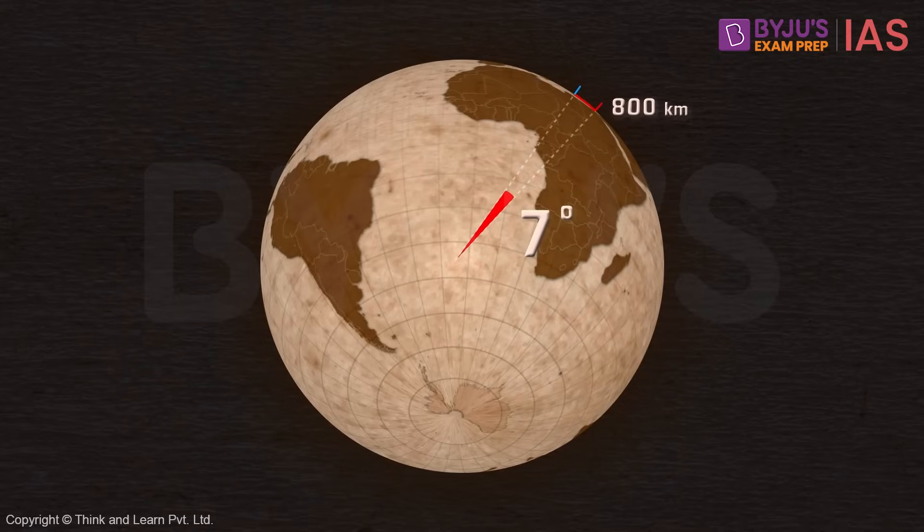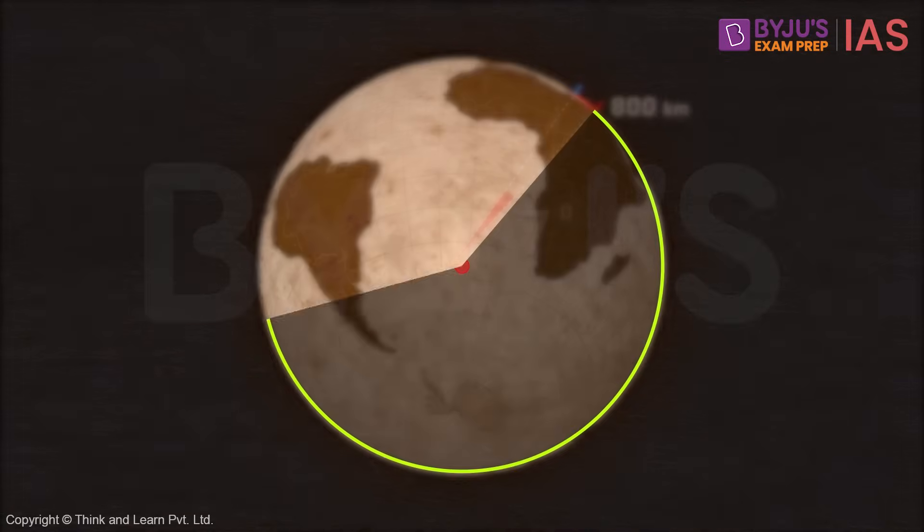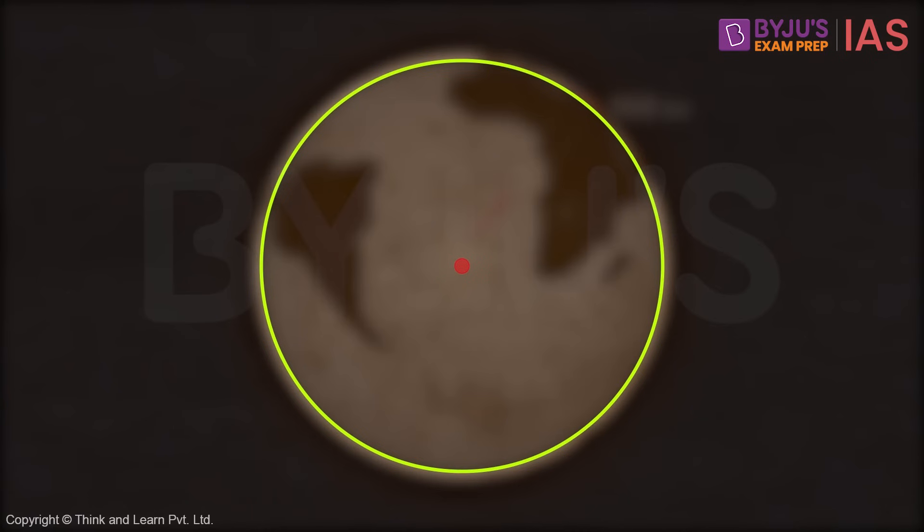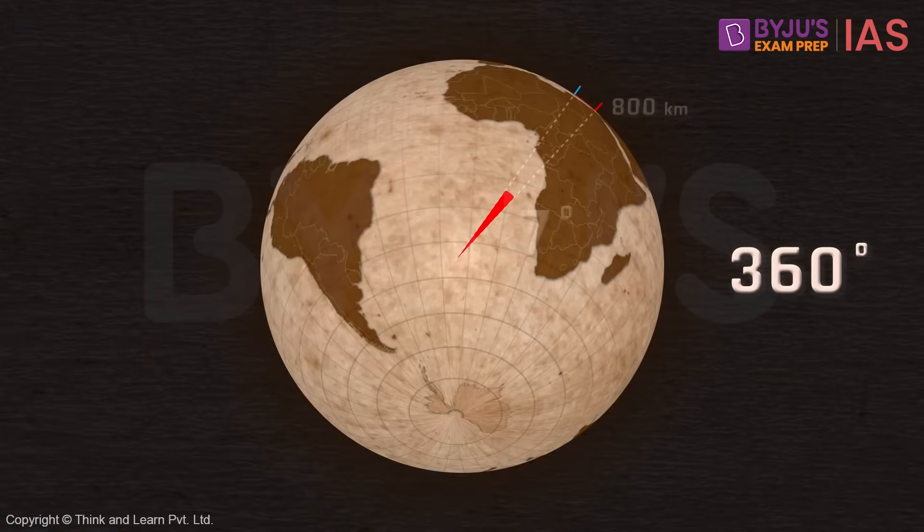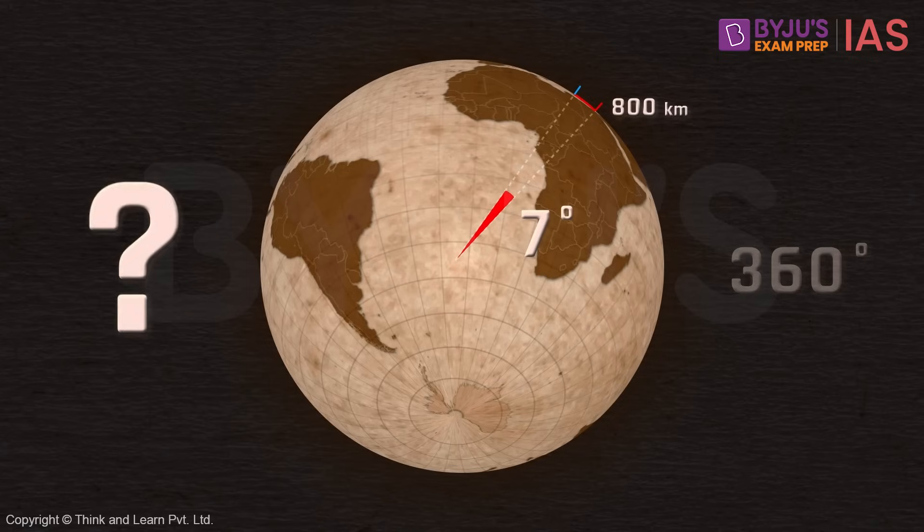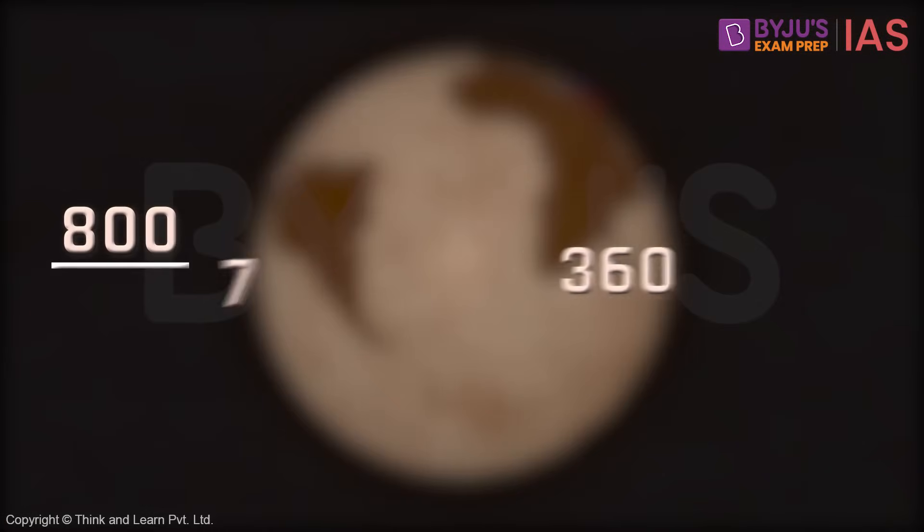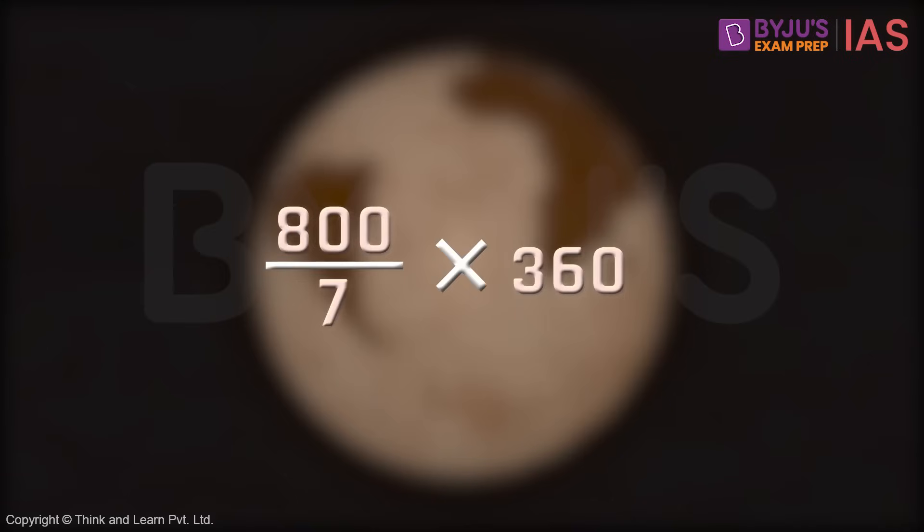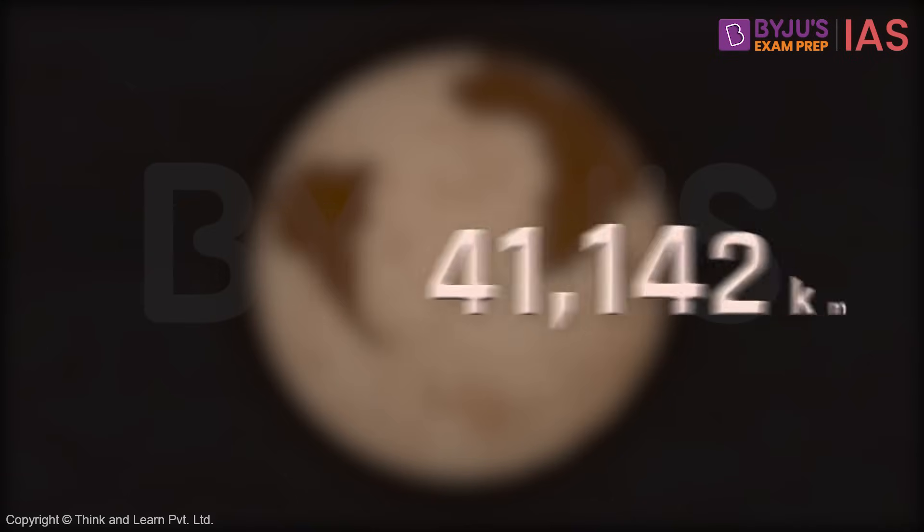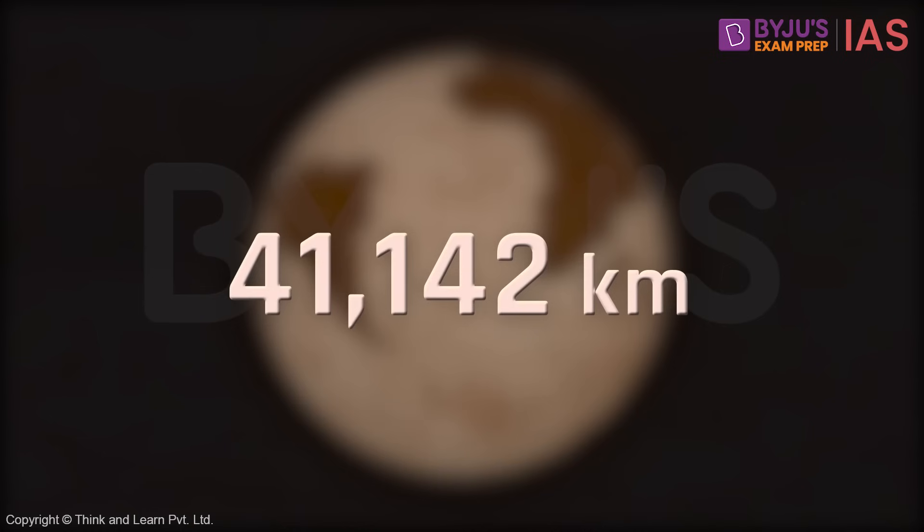How? If the Earth is round, it means it covers an angle of 360 degrees. If seven degrees covers a distance of 800 kilometers, then how much distance will be covered by 360 degrees in total? 800 divided by seven and multiplied by 360, which comes out to be 41,142 kilometers.